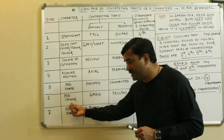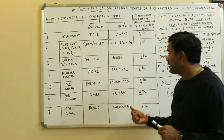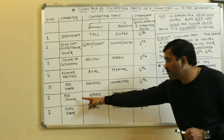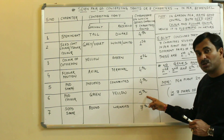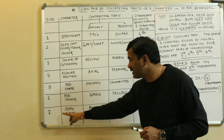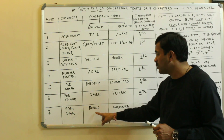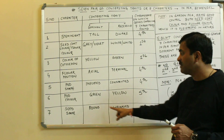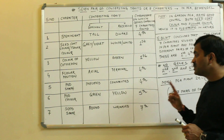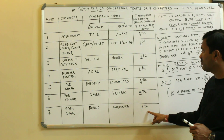Sixth character: pod color. Green is the dominant trait and yellow is the recessive trait. The gene controlling pod color is present on chromosome number five. The last character is seed shape. Seed shape has two contrasting traits — round is dominant and wrinkled is recessive. The gene controlling seed shape is found on chromosome number seven.